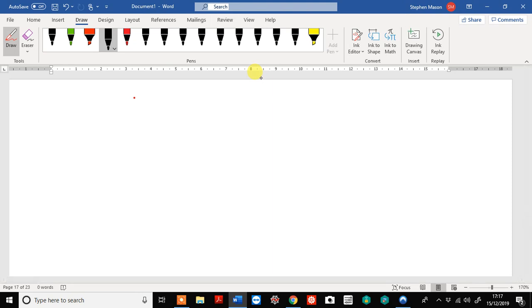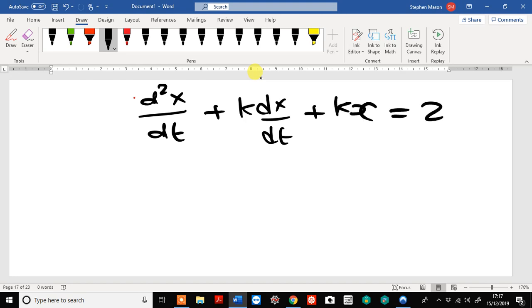We're going to learn to solve ordinary differential equations of the form d squared x by dt squared plus k dx by dt plus kx equals 2k.